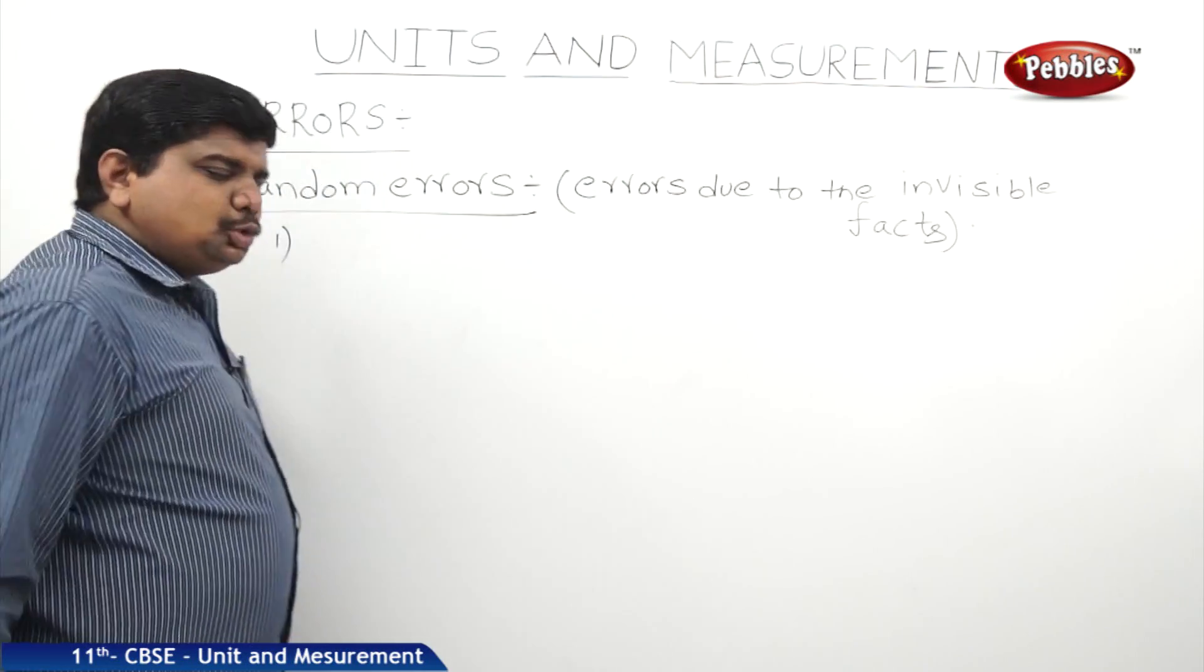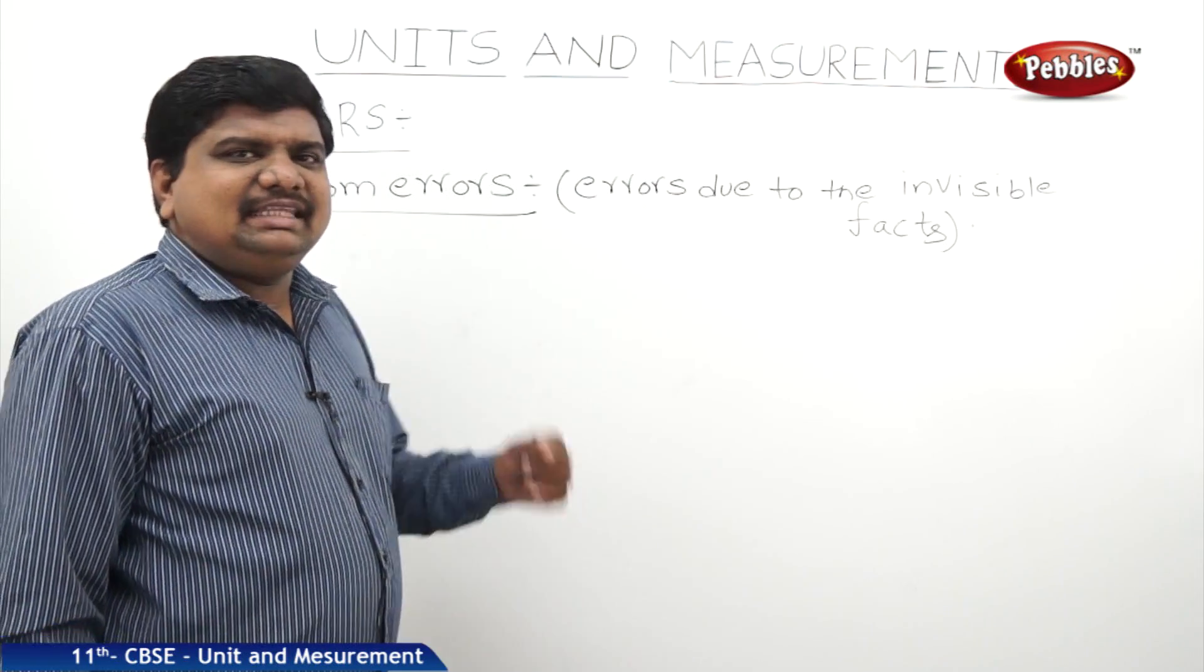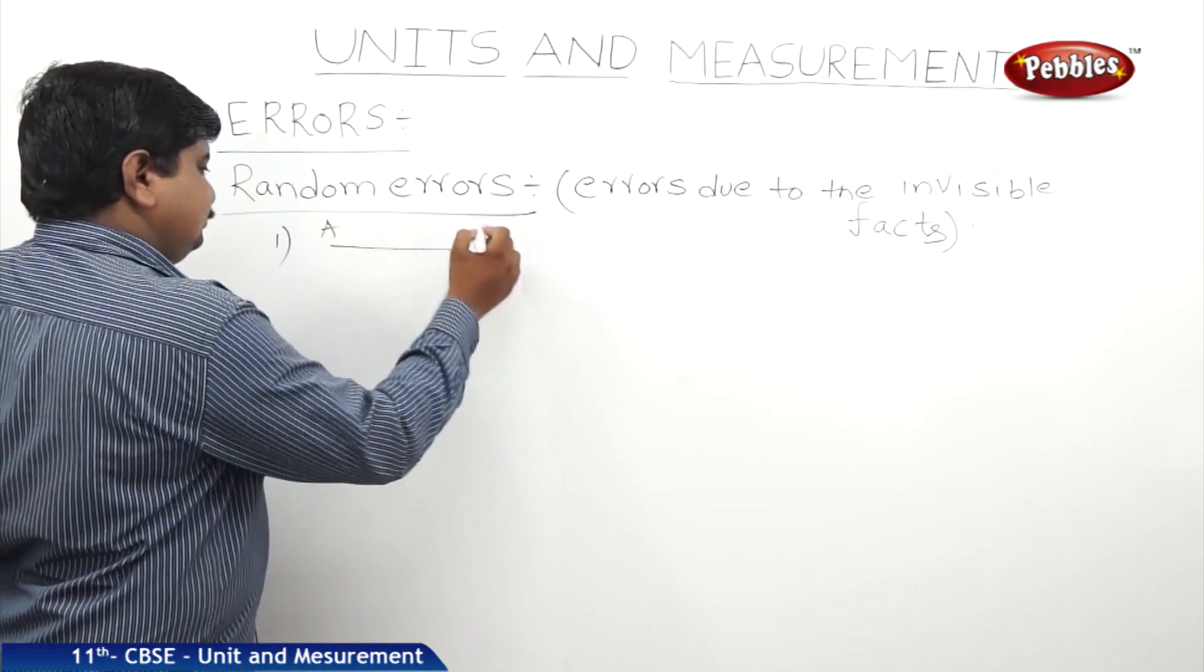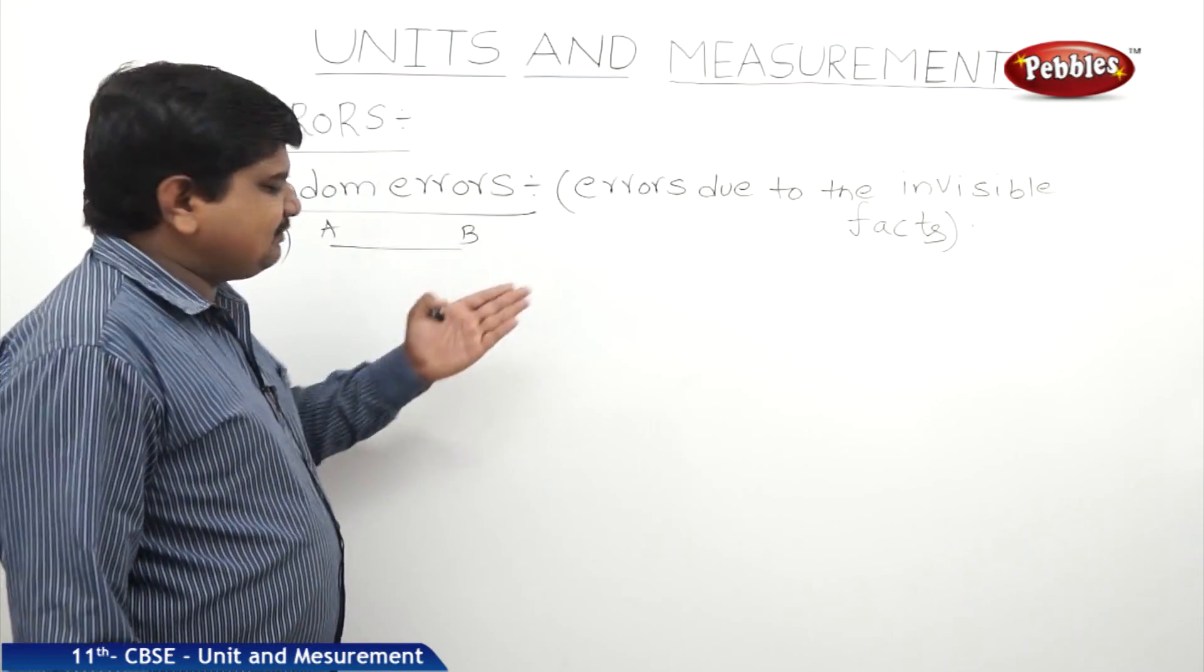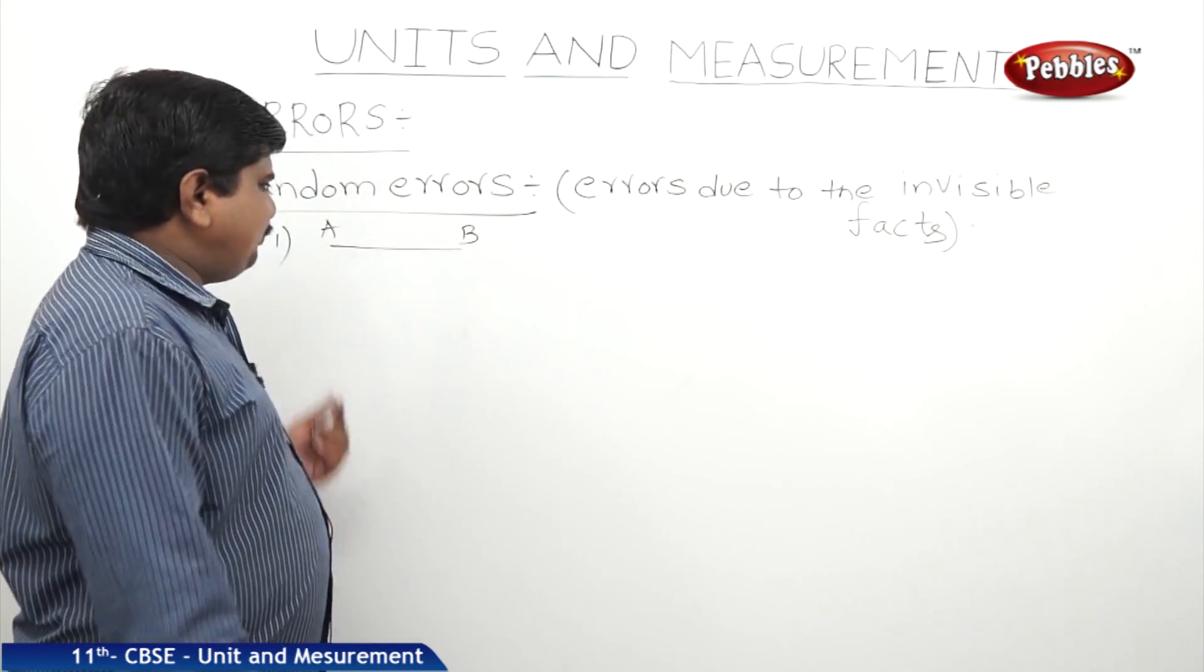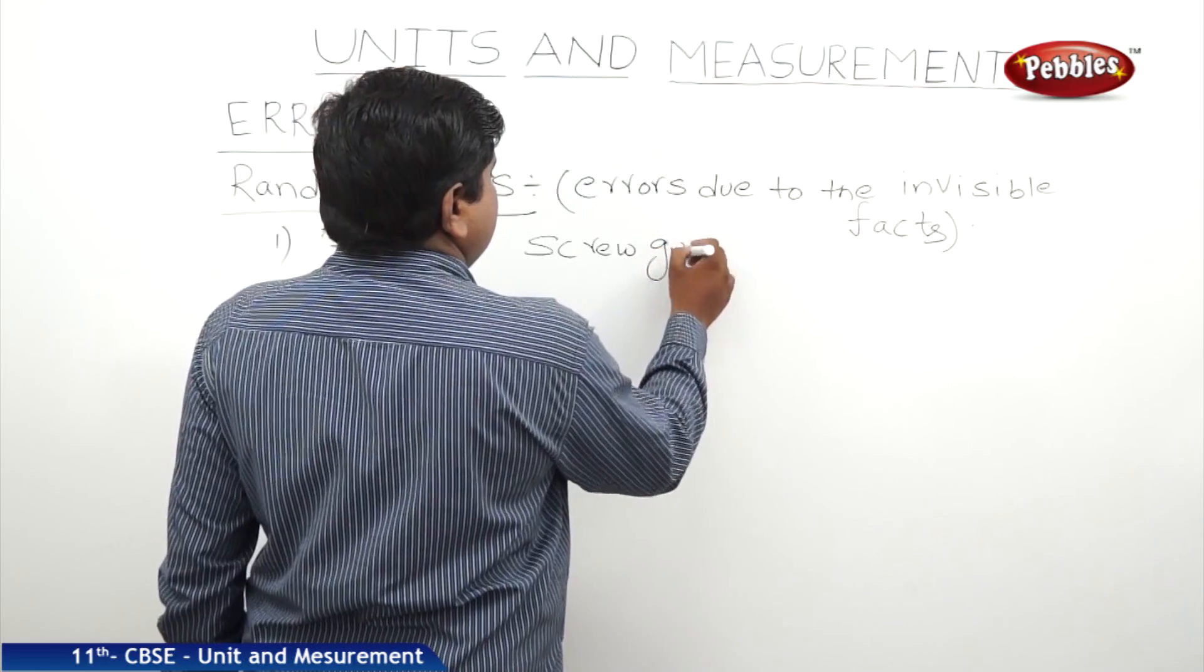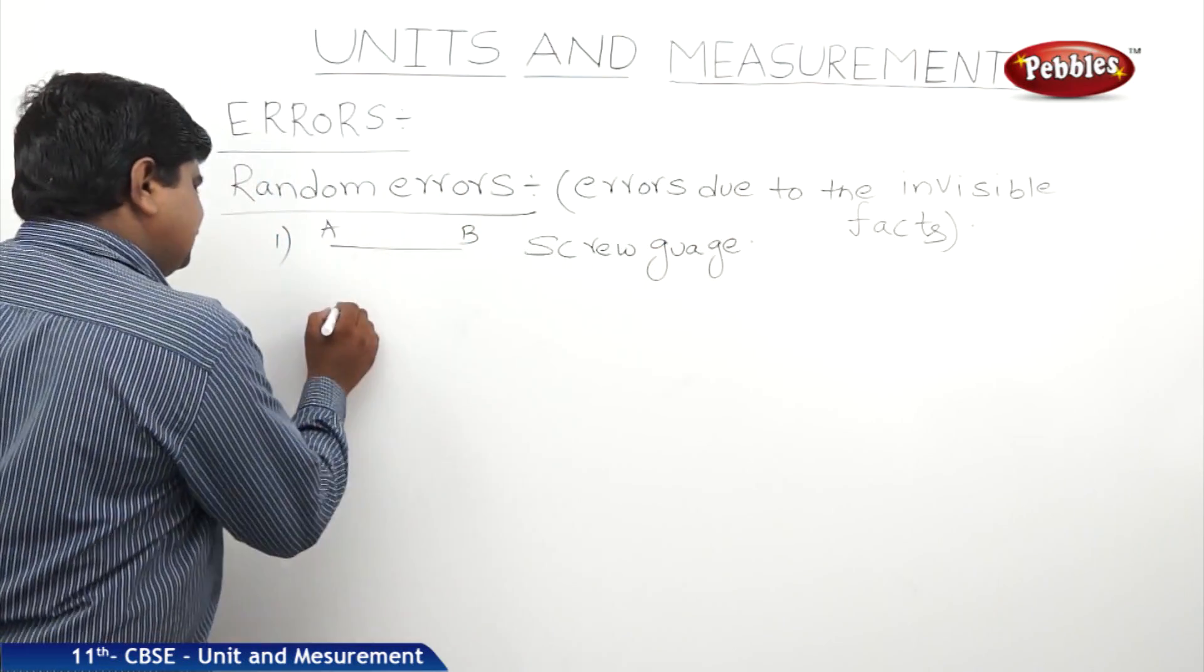Suppose a student is trying to find the length or thickness of a small wire which was given in finite dimensions. Let us take this is a wire of A to B. Now we should find out the thickness of this wire. Maybe it is made up of some metal. The best instrument to find the thickness of this wire is screw gauge.